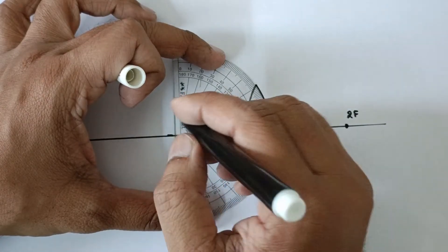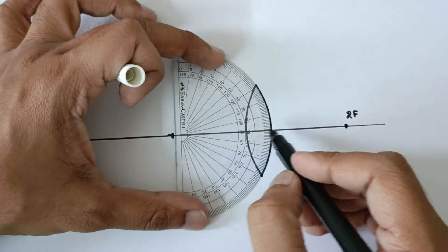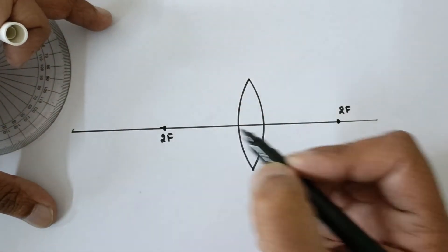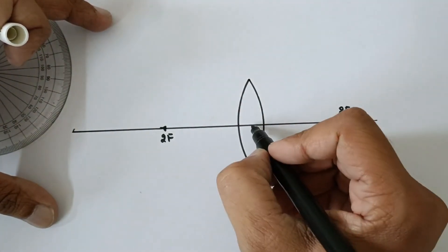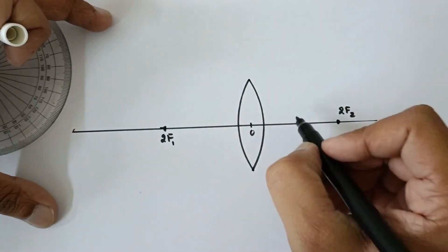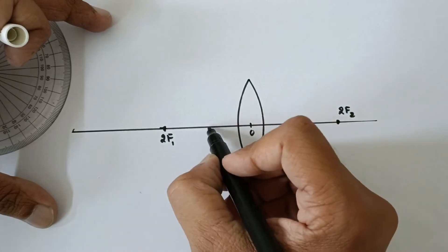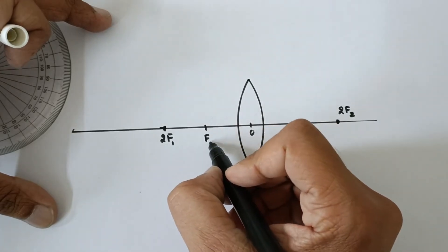Now again mark this point, the edge one. Here is your lens ready. Now this is 2F, you know that this is twice of F2 and this is twice of F1, and the midpoint somewhere over here is F2, here is F1.